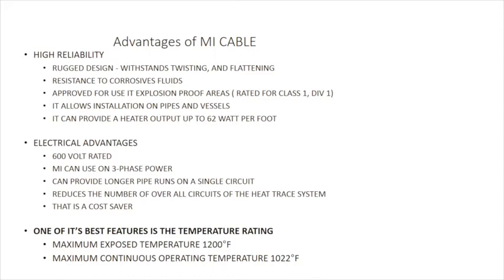For electrical advantages, MI cable is rated up to 600 volts, which means you can use three-phase power — up to 480 volts as typically used in the United States. This allows for longer heat trace runs, which reduces the total number of circuits in the system and results in cost savings. One of its best features is temperature rating: MI cable can be exposed to a maximum of 1,200 degrees Fahrenheit with a continuous operating temperature of over 1,000 degrees Fahrenheit, making it ideal for steam lines, asphalt lines, and high-temperature process lines.